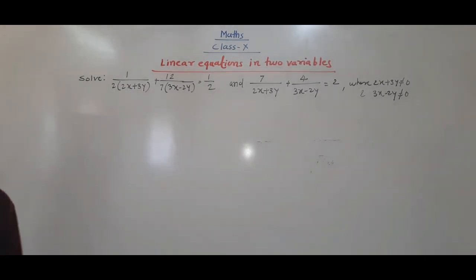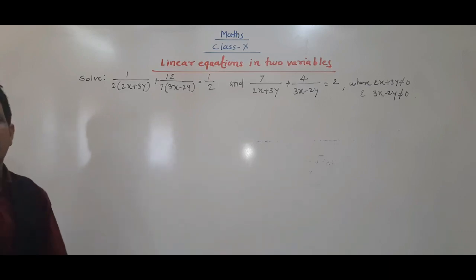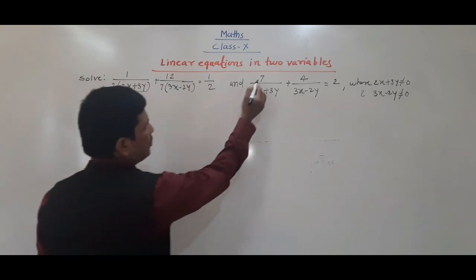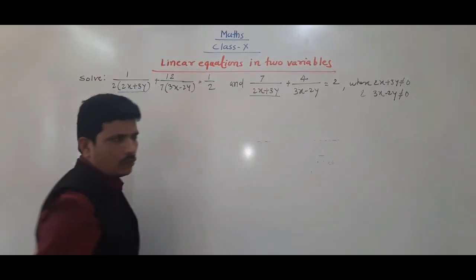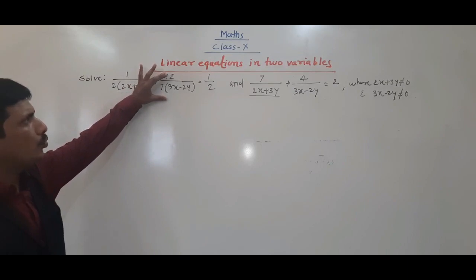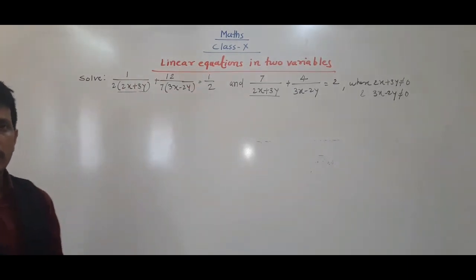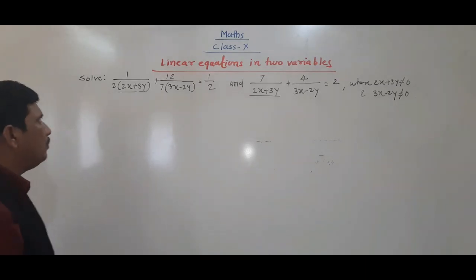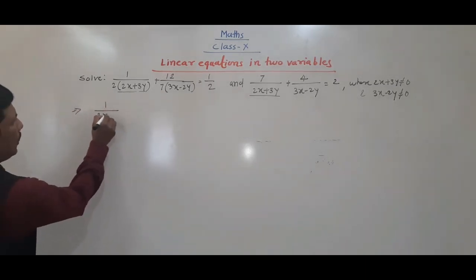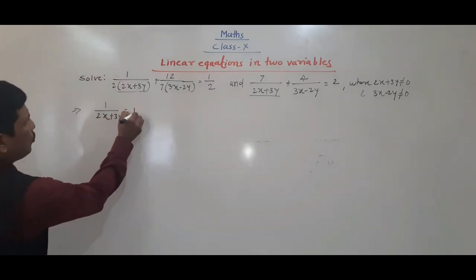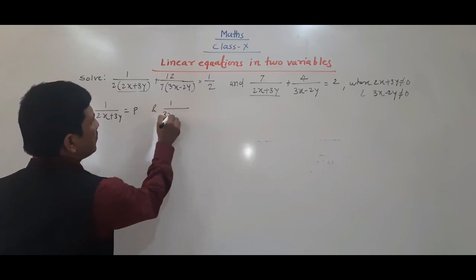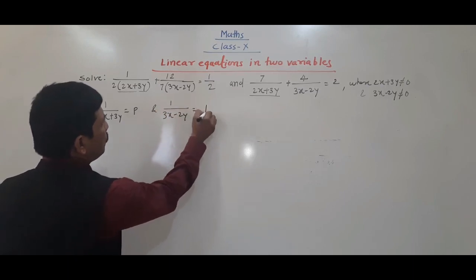Both the equations are in reducible form. If you see here, 1 upon (2x + 3y) is a common factor, and 1 upon (3x - 2y) is also a common factor. So we can substitute: let 1 upon (2x + 3y) equal to p, and 1 upon (3x - 2y) equal to q.